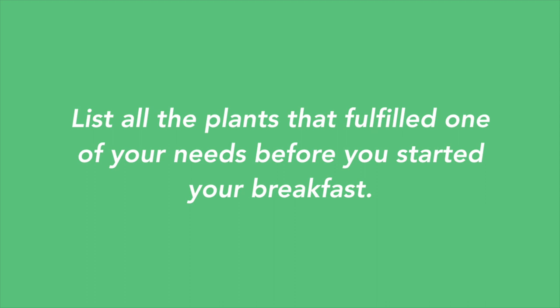Think about what materials your sheets were made of, what pyjamas you were maybe wearing. Were some of these perhaps made of cotton? So the cotton plant is there. Think about your bed, your bedside table — they could be made of wood, but do you know also of which tree? Just write down everything that comes to mind that involves plants. You can think about houseplants in your bedroom as well.